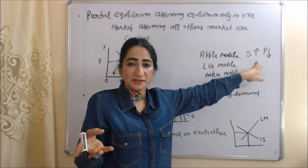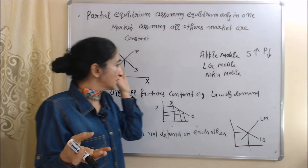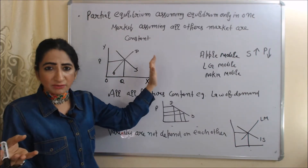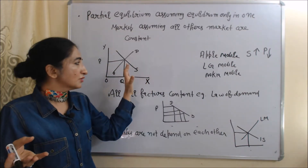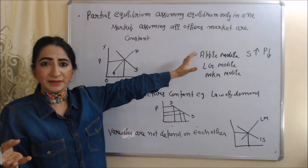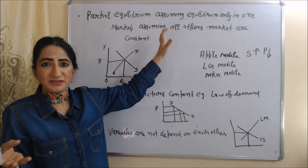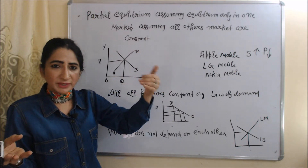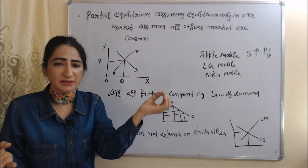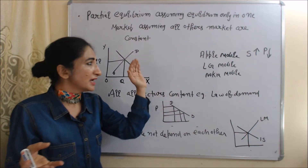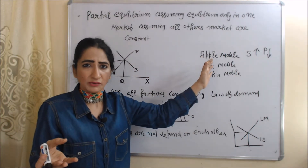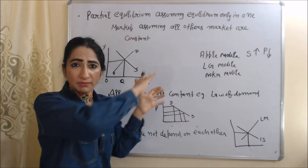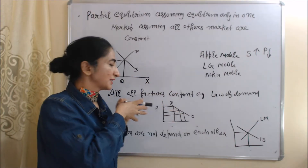Suppose the supply of Apple mobile increases — as supply of Apple mobile increases, their prices fall. As prices of Apple mobile fall, customers shift from Samsung to Apple. So here we see how Samsung is affected by Apple. But in partial equilibrium, we describe equilibrium only in one market and assume all other markets are constant, even though in reality all markets affect each other.